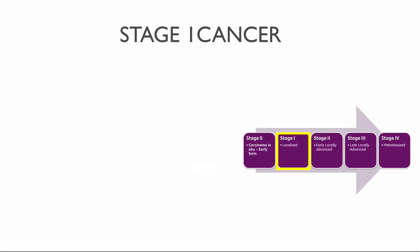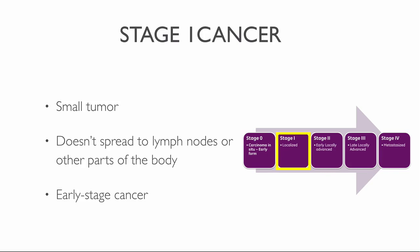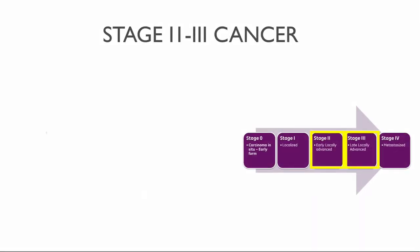Stage one is a small tumor that has not grown deep into nearby tissues, has not spread to the lymph nodes or other parts of the body, and is often called early stage cancer. Stages two and three indicate larger cancers or tumors that grow deeper into nearby tissue and may also spread to the lymph nodes, but not to other parts of the body.